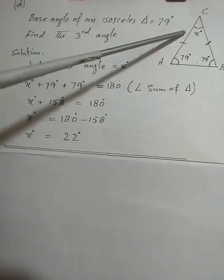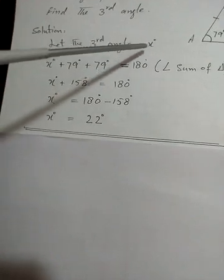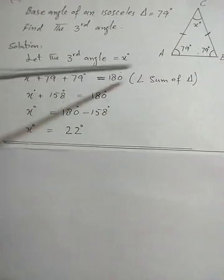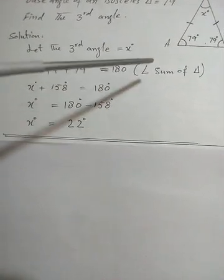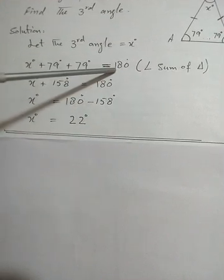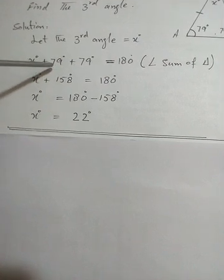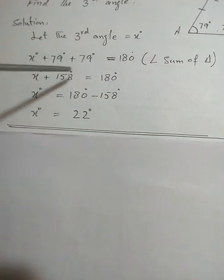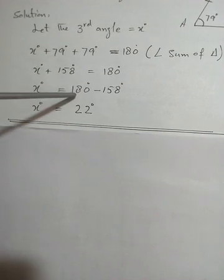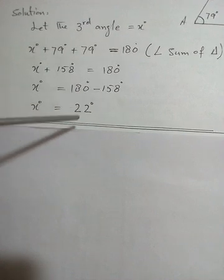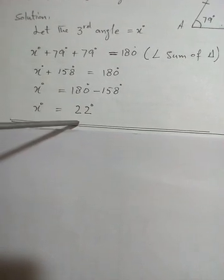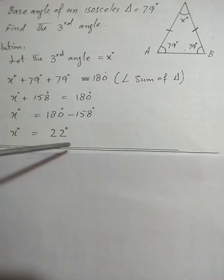Let the third angle be equal to x degrees. Adding the three angles: x plus 79 plus 79 equals 180. By the angle sum property of a triangle, that is 180 degrees. The sum of 79 plus 79 is 158. Simplifying: x equals 180 minus 158, so x equals 22 degrees. This is the third angle of an isosceles triangle when its base angles are given.